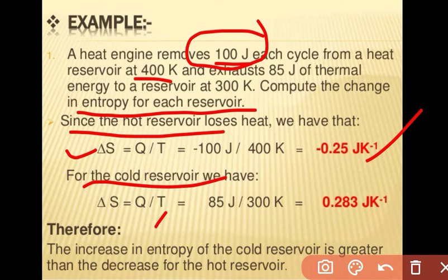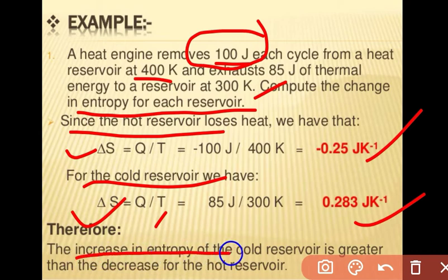For the cold reservoir there is an increase in entropy, because T is low — 300 kelvin — and at low temperature entropy increases while at high temperature entropy decreases. For the cold reservoir, ΔS = Q / T = 85 / 300 = 0.283 joules per kelvin. Therefore, the increase in entropy of the cold reservoir is greater than the decrease in entropy of the hot reservoir.